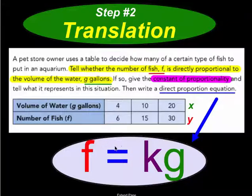So here is how we build our equation. We take F equal KG, or F equals K times G. Now look at this again. Tell whether the number of fish, this is the term all by itself, fish equals, and then directly proportional to the volume of water and gallons. So F equals K times G. Because this is how you set up each and every time a direct proportion equation.